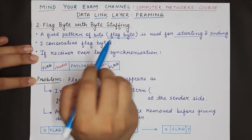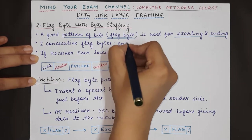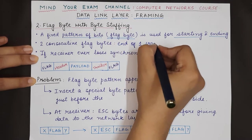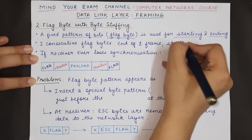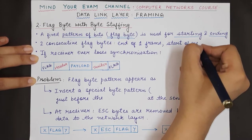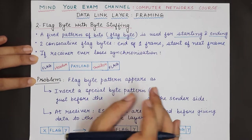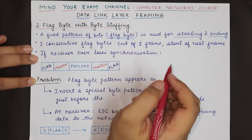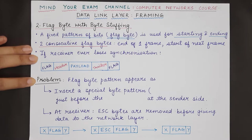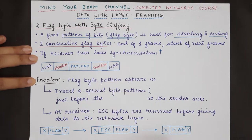Any two consecutive flag bytes in the stream of data means the end of one frame, because two consecutive flag bytes represent the ending flag byte of one frame and the starting flag byte of the next. So any time the data link layer at the receiver side loses synchronization or forgets where the starting and ending of the frame is, it just has to look for two consecutive flag bytes.